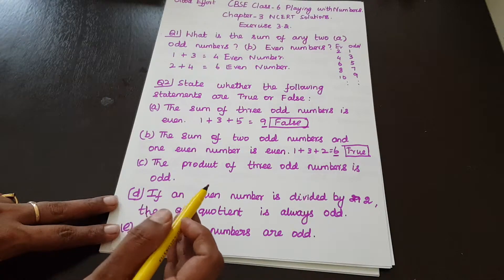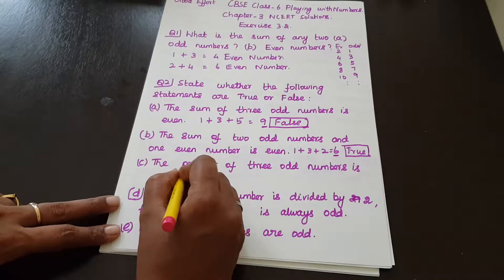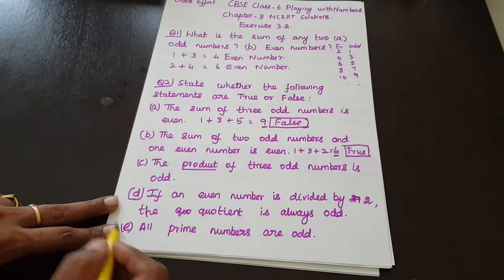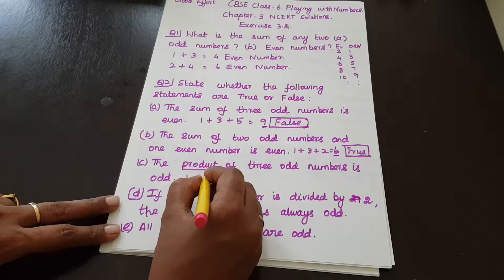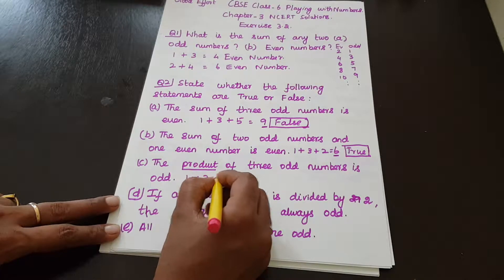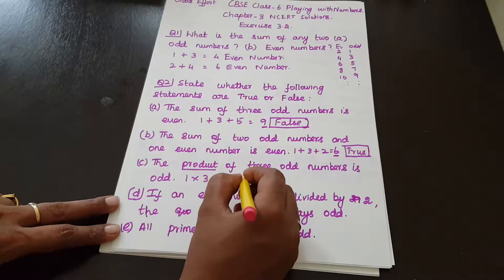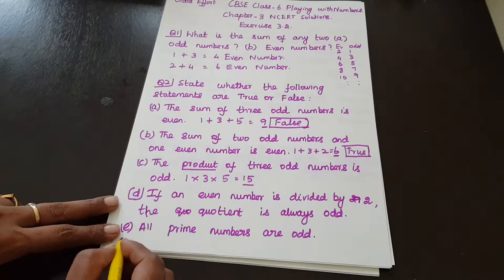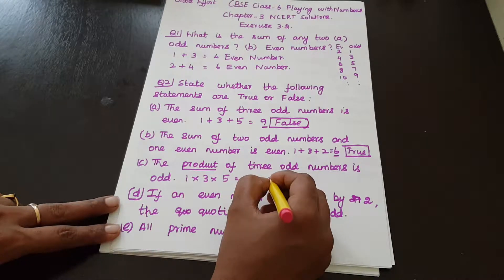Next statement: The product of 3 odd numbers is odd. So, multiply: 1 into 3 into 5. First, 1 into 3 equals 3. Then 3 into 5 equals 15. So 15 is an odd number. Therefore, the statement is true.